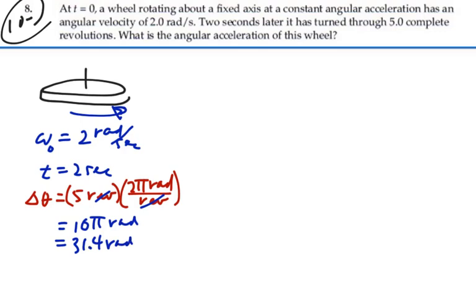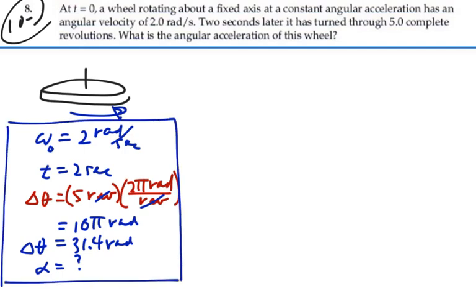And then we're asked for the angular acceleration. So what is that? So there's our four rotational kinematic variables that we need. And we look for the equation that has those four in it. That has displacement, time, initial angular velocity, and angular acceleration.